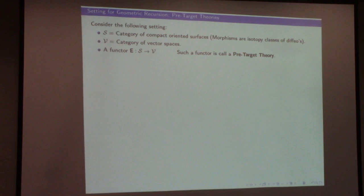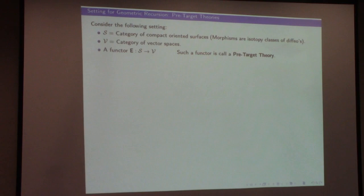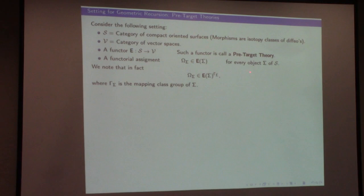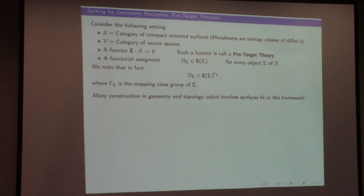Can the diffeomorphisms rotate the boundaries? Right now they can. Very soon we will have them frozen — they will freeze a point in the boundary. The less I say in the beginning, the easier it is to understand the concept. What I'm particularly interested in is a functorial assignment of a vector in the vector space for each surface. If it's a functorial assignment, this vector lies in the mapping class group invariant part of the vector space. That's the geometric setting in which geometric recursion works. Many constructions in geometry and topology involving surfaces fit in this framework.